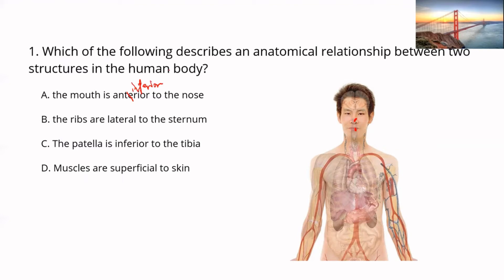Option B: the ribs are lateral to the sternum. The sternum is right in the middle and the ribs are on the sides, so this seems correct. It's always a good idea to go through all the options before deciding — that's a recommended test-taking strategy.